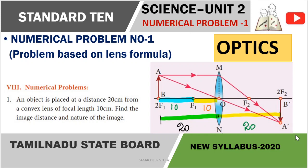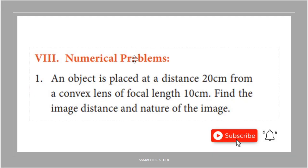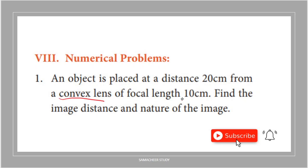Hi students, welcome to Samacheer Study YouTube channel. In this video, numerical problem number one is solved from standard 10 science unit two, optics. The question: an object is placed at a distance of 20 centimeters from a convex lens of focal length 10 centimeters. Find the image distance and nature of the image.